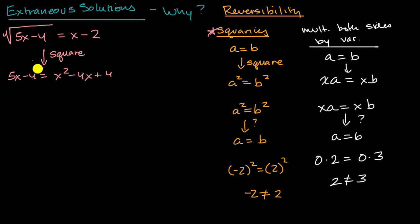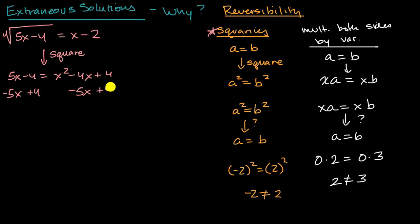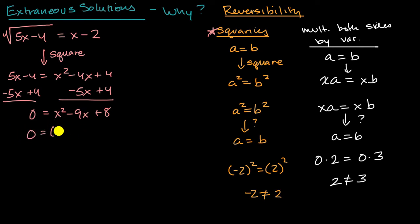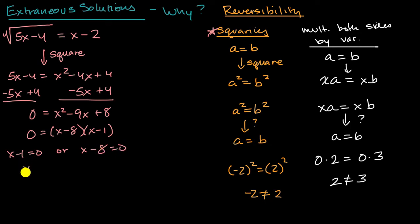If this looks completely unfamiliar to you, we go into much more depth in other videos where we introduce the idea of radical equations. We can subtract five x from both sides and add four to both sides to get a zero on the left-hand side. So we get zero equals x squared minus nine x plus eight, or zero equals x minus eight times x minus one, giving us x equals one or x equals eight.